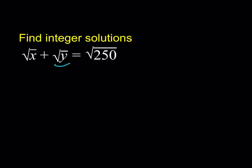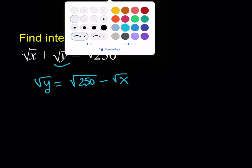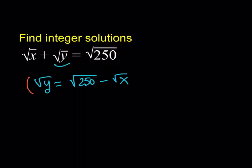I'm going to isolate the square root of Y here. So, that's going to give me the square root of 250 minus the square root of X. And then, obviously, this is a very obvious step, I think, for most people. I'm going to square both sides. So, let's go ahead and do that next.